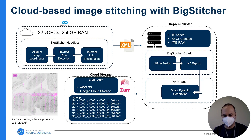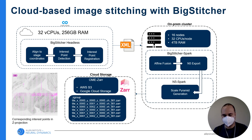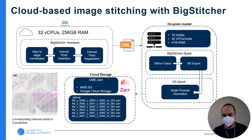The output of this fusion is an N5 dataset, which we progressively downsample to generate a multiscale pyramid. We then convert this N5 to OME-Zarr and upload it to our S3 bucket for long-term storage and subsequent processing.